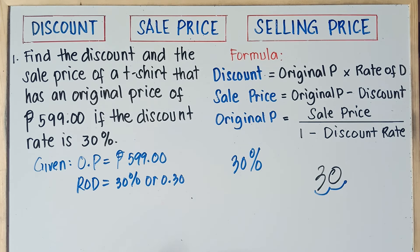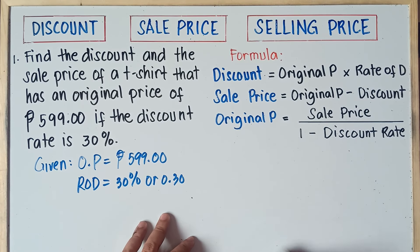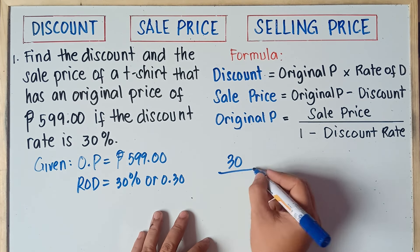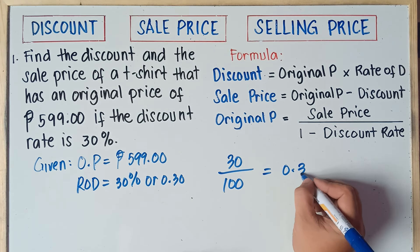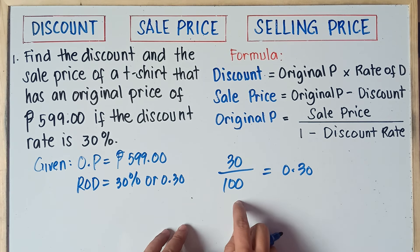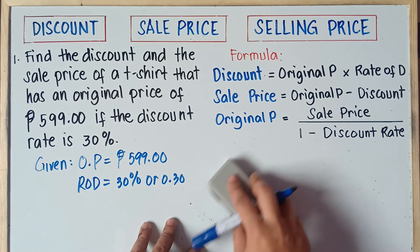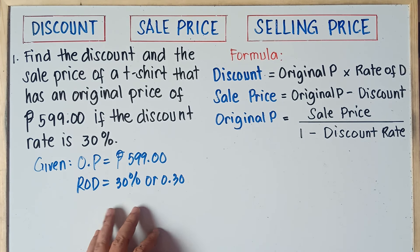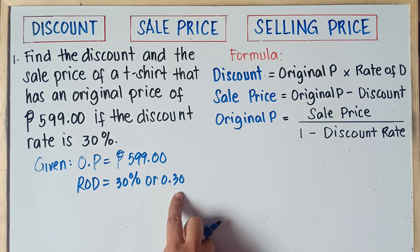30% is equivalent to 0.30. Or if you want, you can divide: 30 divided by 100 gives you 0.30. Use your calculator — 30 divided by 100 equals 0.30. Or just simply move the decimal point right to left twice: 1, 2 — this will be 0.30.